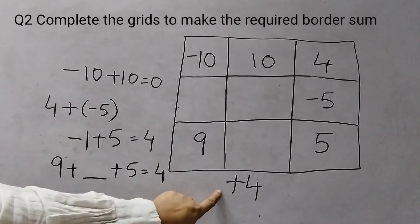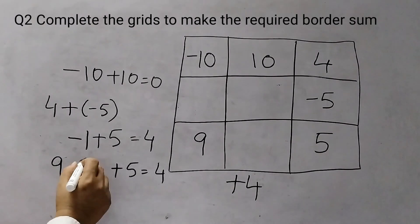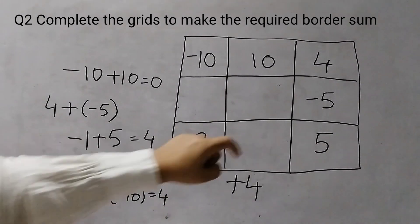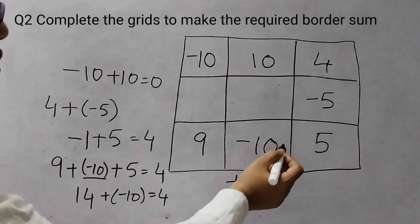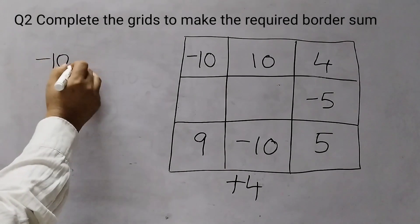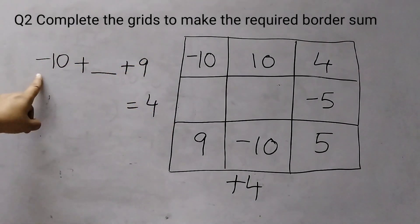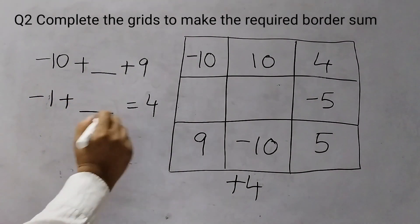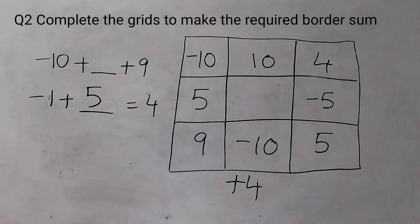Now we take the bottom row: 9, blank space, and 5. So 9 plus something plus 5 should give me plus 4. Since 9 plus 5 is 14, if I put minus 10 here, 14 plus minus 10 equals 4. So I will fill up minus 10 here. For the left column: minus 10 plus something plus 9 should give 4. Minus 10 plus 9 is minus 1, so I need to add 5 to get 4.